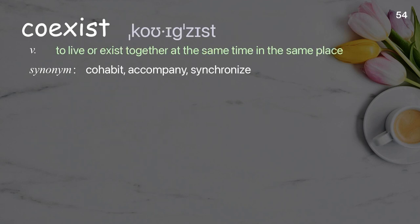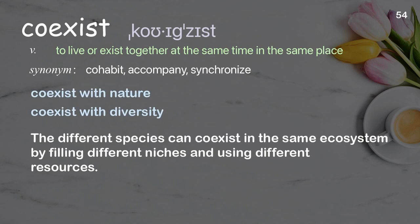Coexist: to live or exist together at the same time in the same place. Examples: coexist with nature, coexist with diversity. The different species can coexist in the same ecosystem by filling different niches and using different resources.